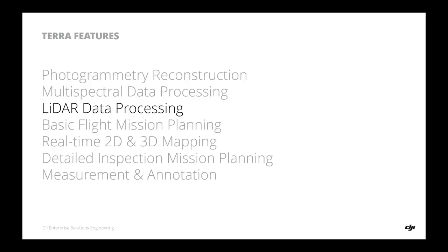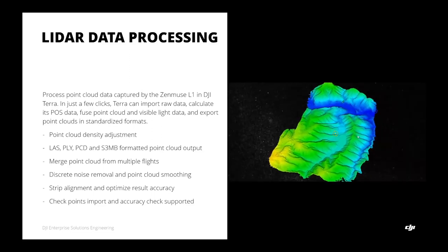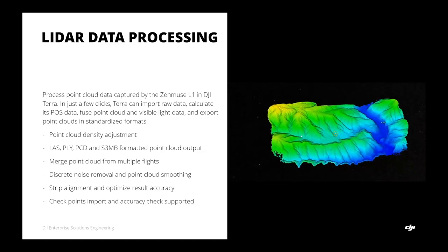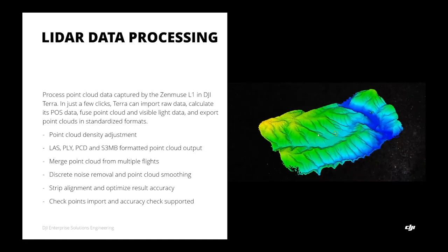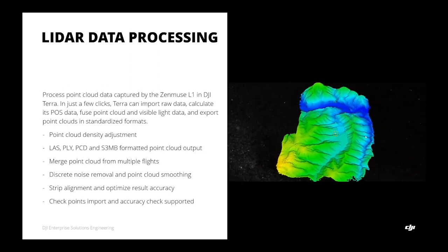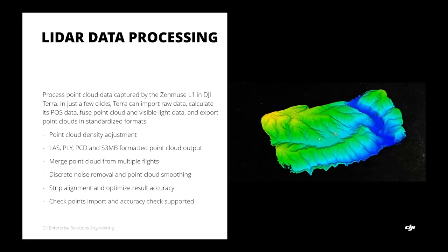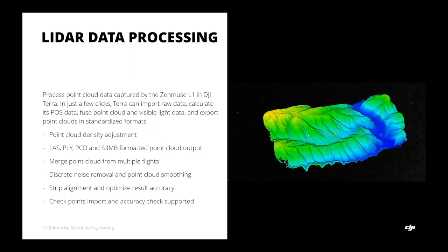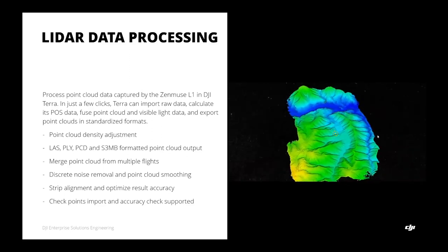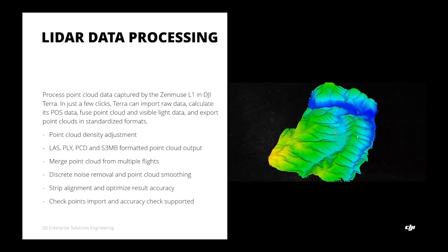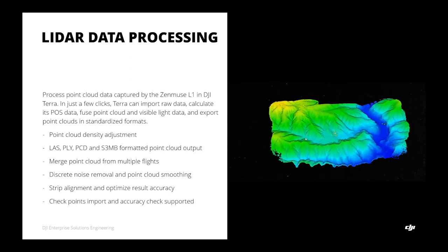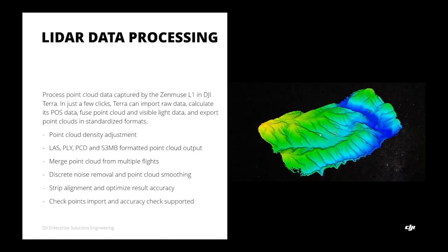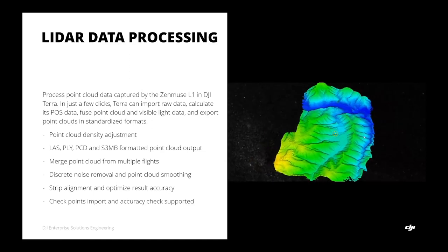For LiDAR data processing, users with a Zenmuse series LiDAR payload can use DJI Terra to import raw data, calculate post-processed data, fuse point cloud data with visible light, colorize the point cloud, and export it in standardized formats for third-party software. Users can adjust point cloud density, output in different formats, and merge point clouds from multiple flights into one. Using Terra Pro, users can also remove noise, reduce point cloud thickness, and perform strip alignment to optimize point cloud accuracy.